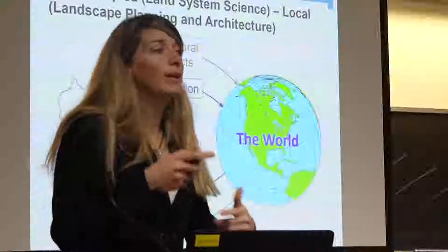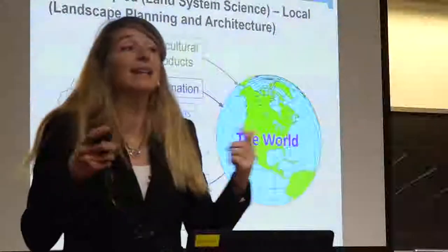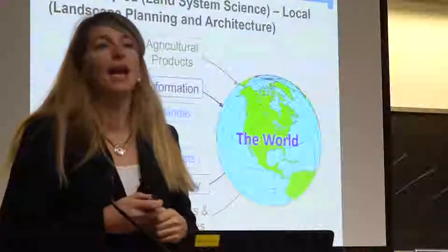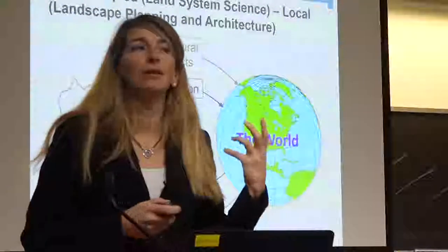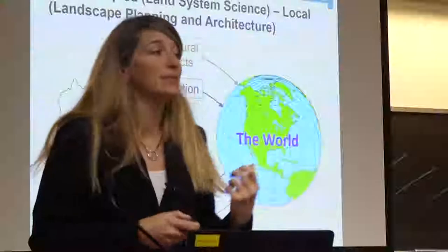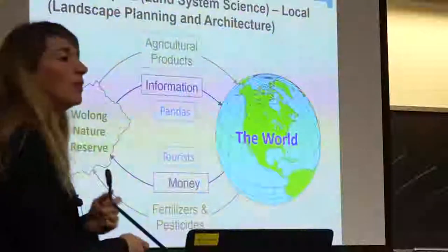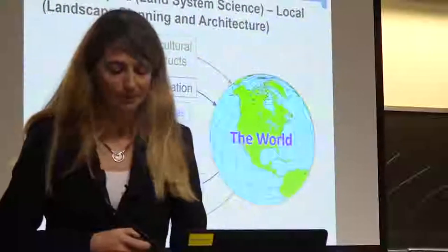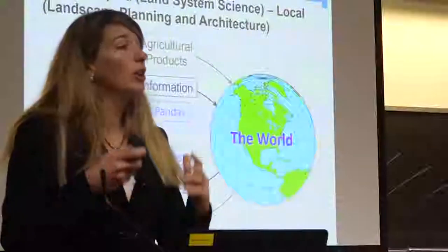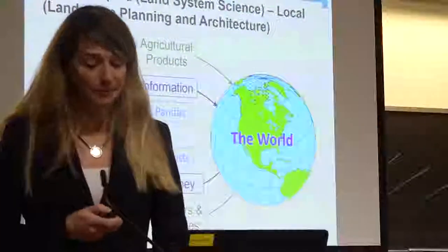So we need to understand how the scales play with each other. This is typical for land system science — to really try to understand how these things are linked together. So how can we include this understanding of scale when we design?